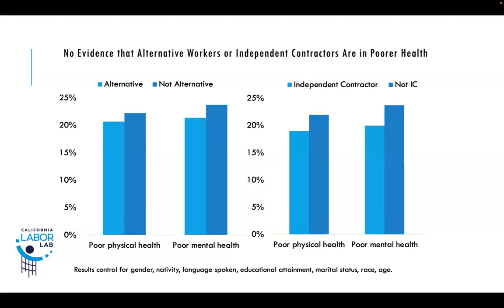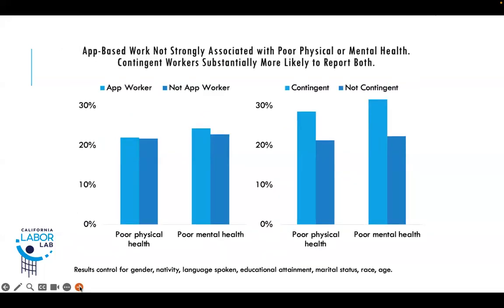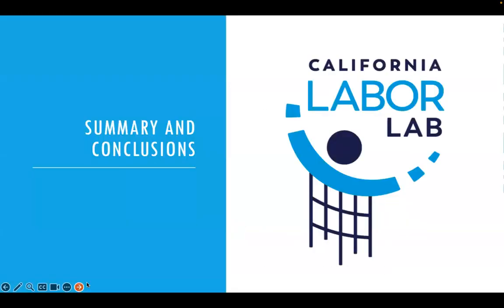Turning to health status: we found no evidence that alternative workers or independent contractors are in poorer health, using standard federal survey questions on overall physical and mental health status — results controlling for other demographic characteristics. App-based work is also not strongly associated with poorer mental health. However, contingent workers are substantially more likely to report both poor physical health and poor mental health, with about 25% greater rates of both.